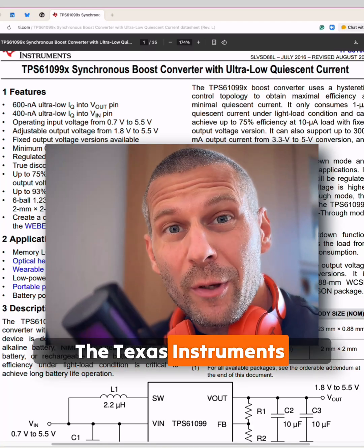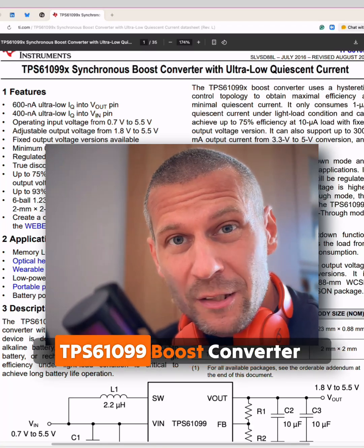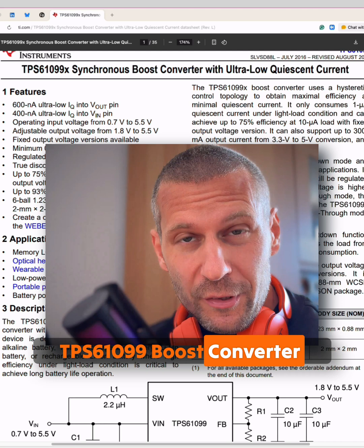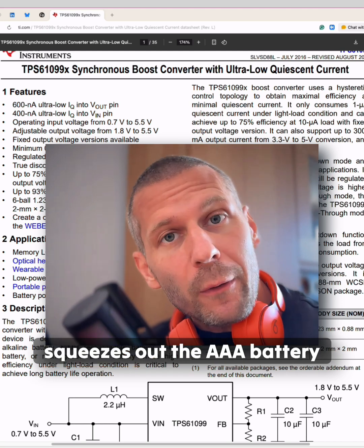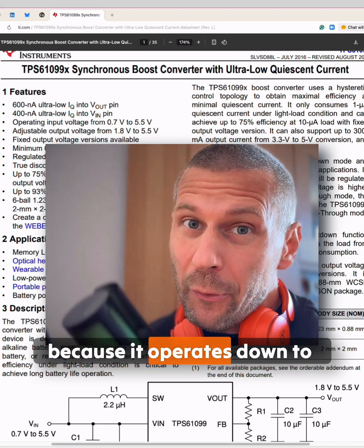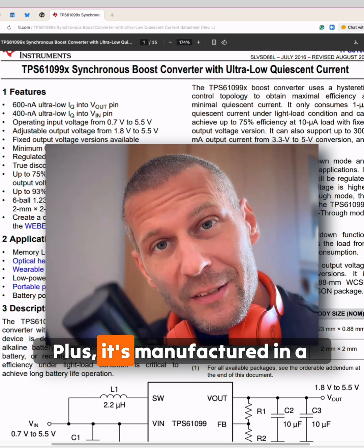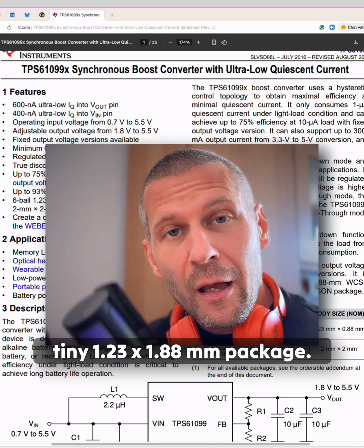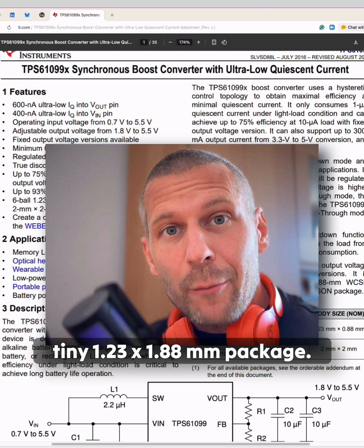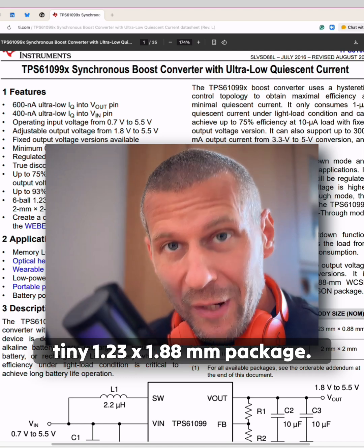The Texas Instruments TPS61099 boost converter squeezes out the AAA battery because it operates down to 0.7V. Plus, it's manufactured in a tiny 1.23 x 1.88 mm package.